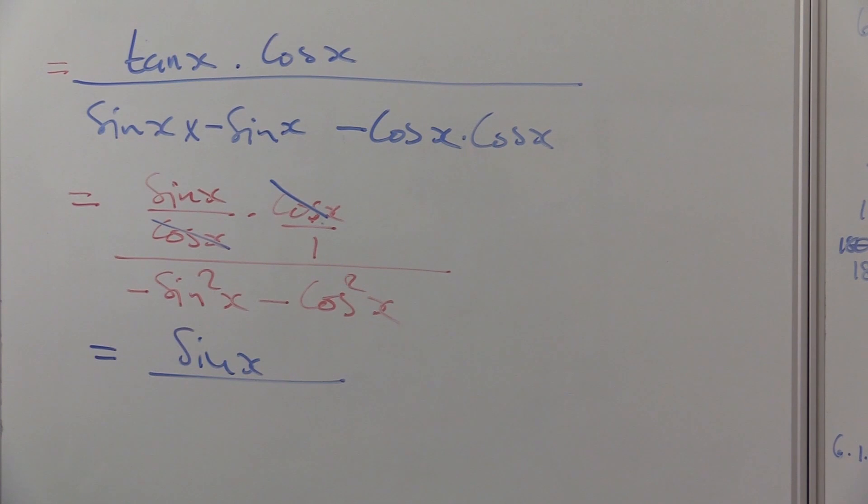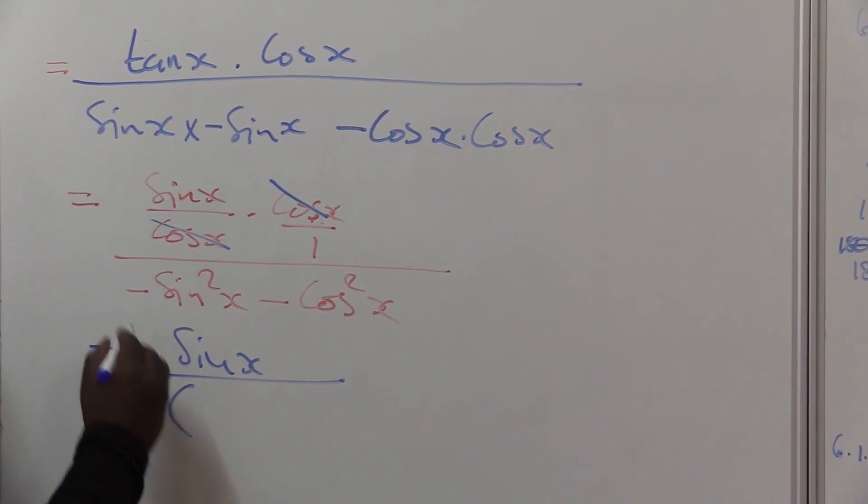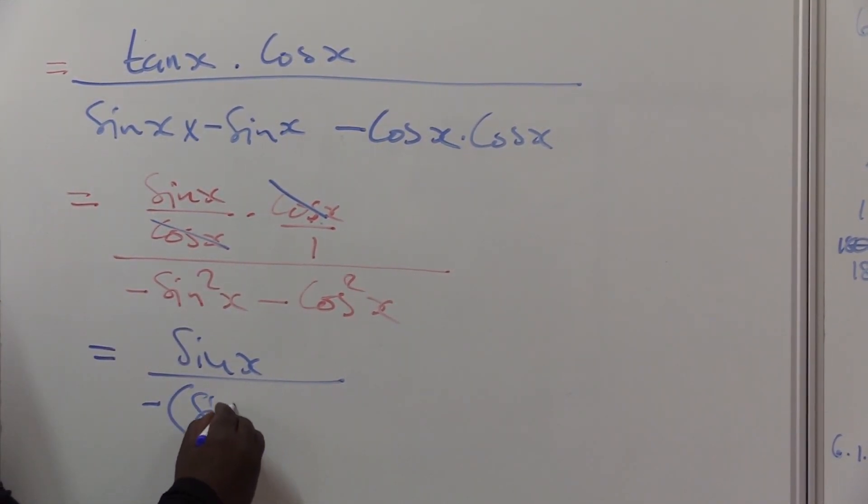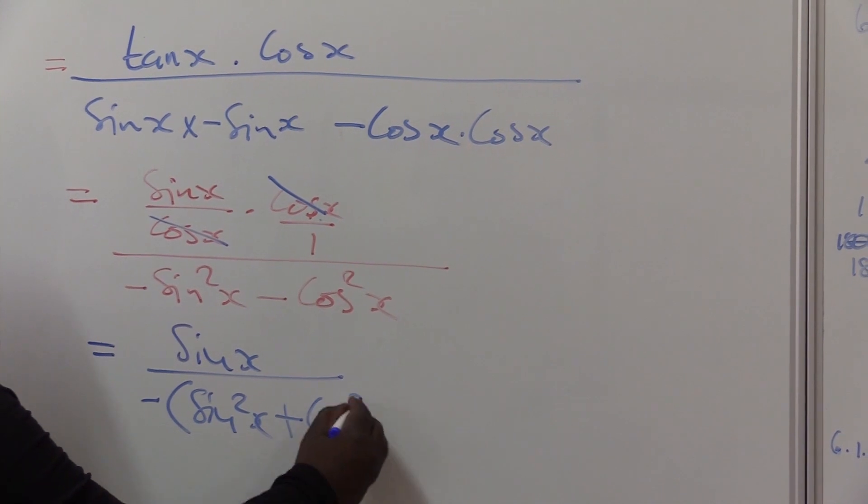What's a common factor there? Both of them have got a negative sign. Let's take it out. Negative into what will give me that one? Into positive sin squared x. Negative into what? Into plus cos squared x.